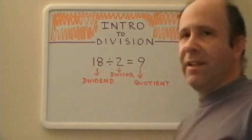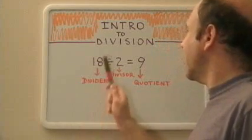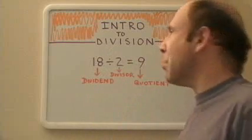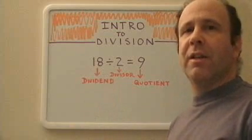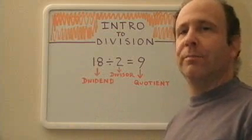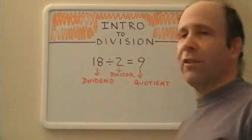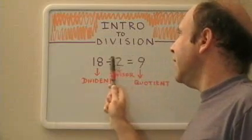Here we have a problem. 18 divided by 2 equals 9. Let's look at each number and see what each number represents. The 18 is called the dividend, and this is the number that is being divided into. The 2 is called the divisor, and this is the number that exactly divides into the dividend.